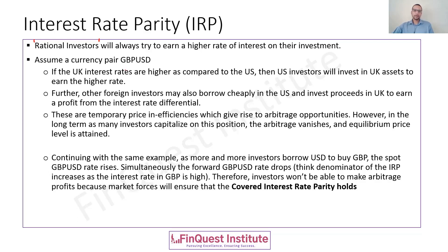Assume a certain currency pair — we'll take the example of British pounds and US dollars. Let's say the UK interest rates are high compared to the US. Naturally, from any rational investor's perspective, they would start pursuing assets in the UK, because they are yielding a higher interest rate. So investors in the United States will start investing in UK assets to earn a higher rate. Along with this, other global investors may also want to borrow cheaply in US dollars and invest the proceeds in British pounds in order to make a profit from that interest rate differential.